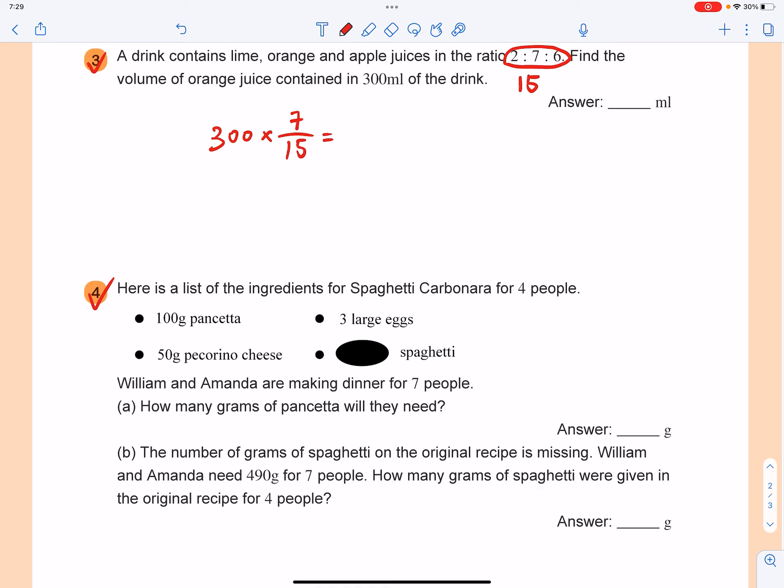300 divided by 15, you got 20 times by 7. That's the answer, which is 140ml. So you got 140 as a final answer. Remember that.